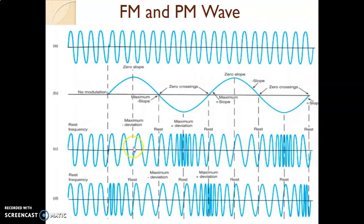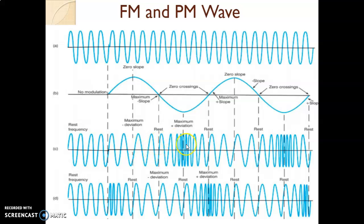Do not get confused with the FM wave as maximum amplitude equals maximum frequency and minimum amplitude equals minimum frequency. In this diagram, it is shown that when maximum amplitude is there, maximum deviation will take place. Deviation means if frequency is high it will become low, and if frequency is low it will become high. With reference to that, the FM graph is drawn.